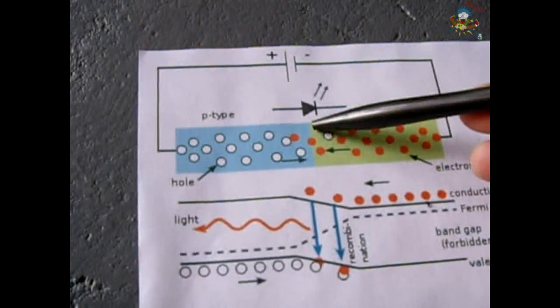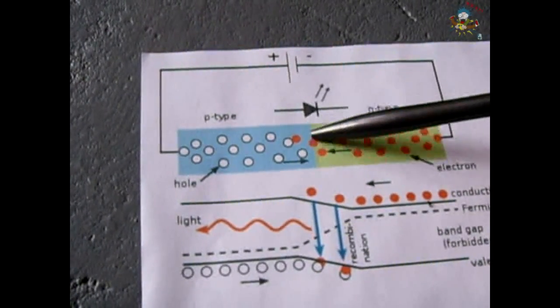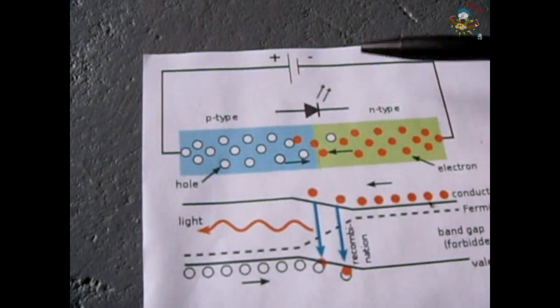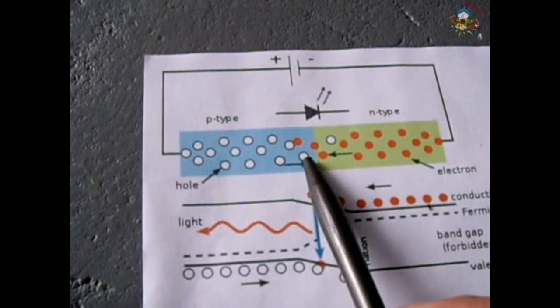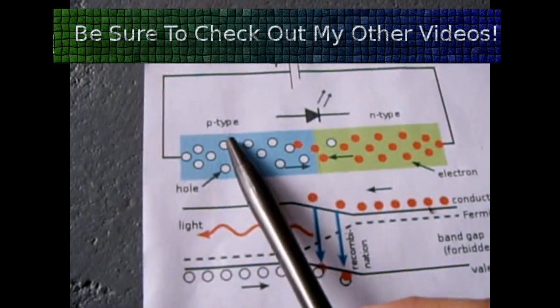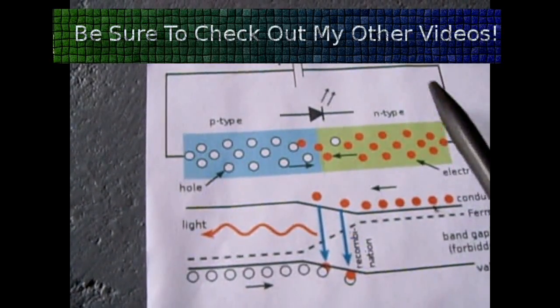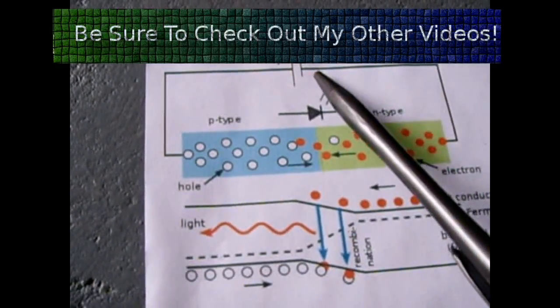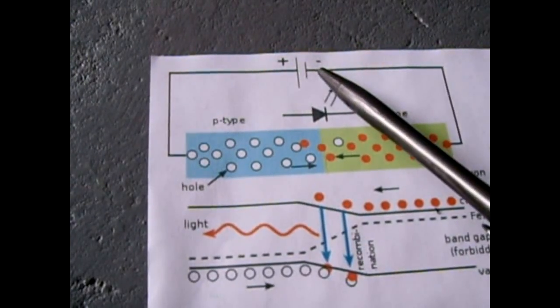When the positive is connected to this side and the negative is connected to this side, there is a little tiny area between the two layers called a depletion zone. It acts like a barrier or a wall which prevents the electrons from jumping across to fill all these little holes in the p-type material, allowing the current to flow.